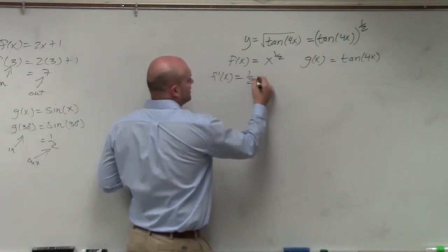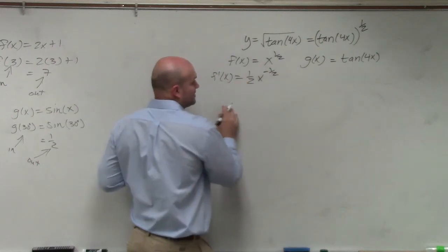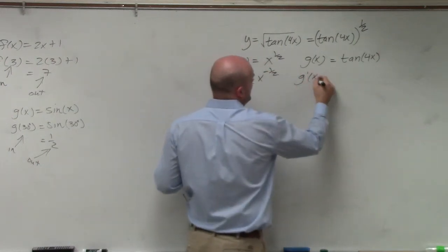So 1 half times x to the negative 1 half. Remember, that's going to go back in the denominator. And g prime of x,